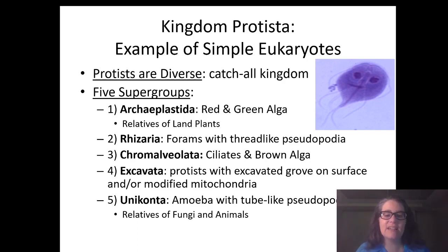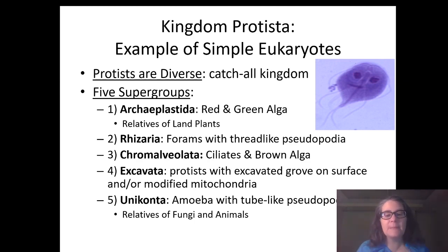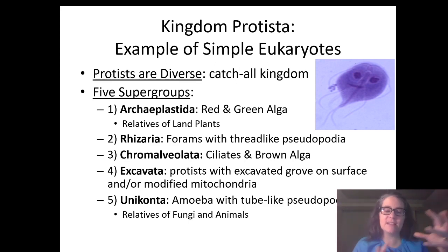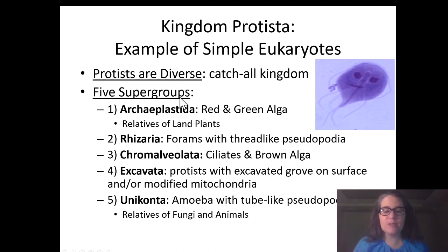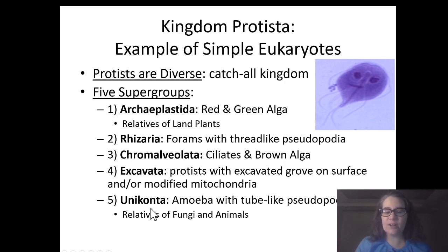Kingdom Protista is kind of a catch-all group. It contains things like amoebas, paramecium, and all of your algaes. It's catch-all because it's not a true evolutionary group — certain groups are more related to plants, fungi, and animals, and some are more related to themselves. We have five supergroups; Archaeoplastida holds the relatives to red and green algae, chromialveolata contains algaes and ciliates, and our own relatives — fungi and animals — are with the Unikonta supergroup.